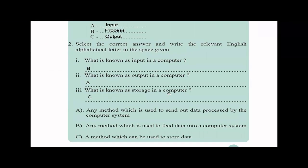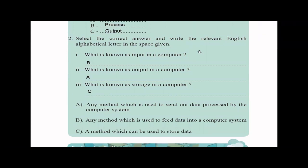Then they're asking, select the correct answer and write the relevant English alphabetical letter in the space given. What is known as input in a computer? So input is like mouse, kind of a device where you can get the data into the computer system. Any method which is used to feed data into a computer system, like the mouse or the keyboard. So the answer should be B for the first one.